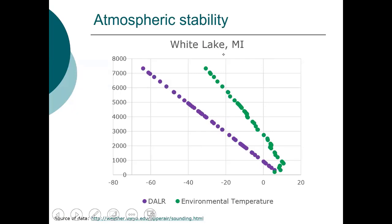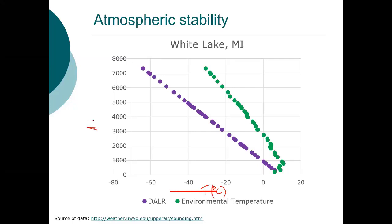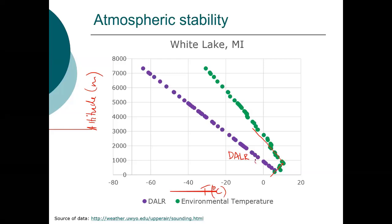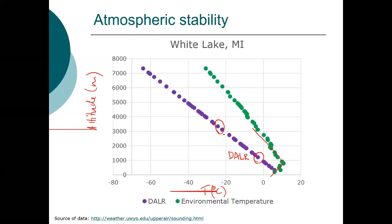Here I plotted temperature in degrees C versus altitude in meters. This is our dry adiabatic lapse rate — that's our balloon. Notice here the temperature actually increases at lower altitudes and then decreases. The balloon temperature is less than the atmospheric temperature — this is a stable condition. At lower altitudes, it's actually an inversion, because the temperature is increasing with altitude instead of decreasing as we'd expect.